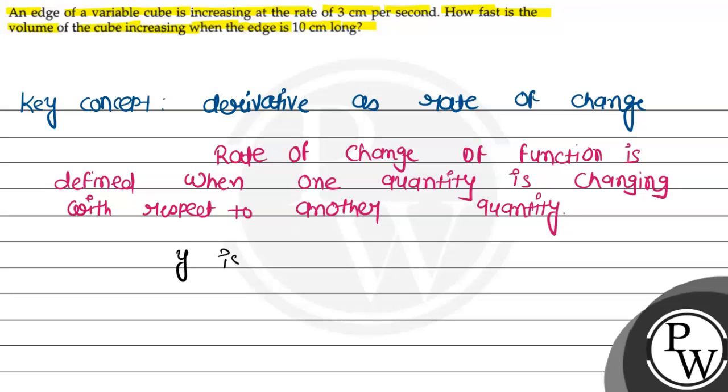If y is changing with respect to x, then dy/dx is the rate of change according to the definition when one quantity is changing with respect to another quantity.